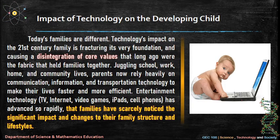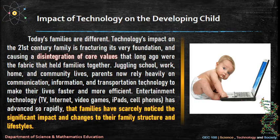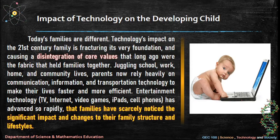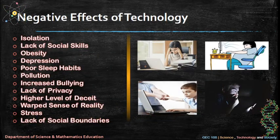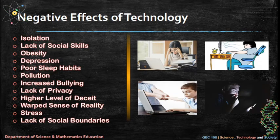Technology's impact in the 21st century: the 21st century family is fracturing its very foundation, causing a disintegration of core values that long ago were the fabric that held families together. Juggling school, work, home, and community lives, parents now rely heavily on communication, information, and transportation technology to make their lives faster and more efficient. Entertainment technology — TV, internet, video games, iPads, cell phones — has advanced so rapidly that families have scarcely noticed the significant impact and changes to their family structure and lifestyles. Negative effects include isolation, lack of social skills, obesity, depression, poor sleep habits, pollution, increased bullying, lack of privacy, and higher levels of deceit.